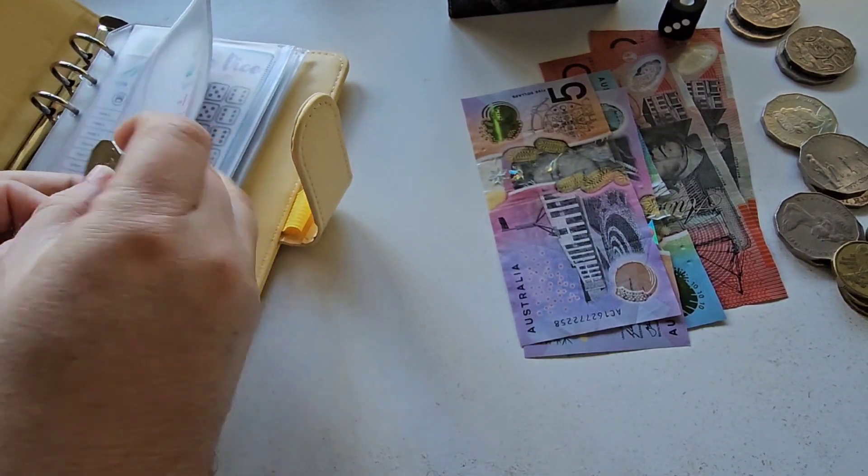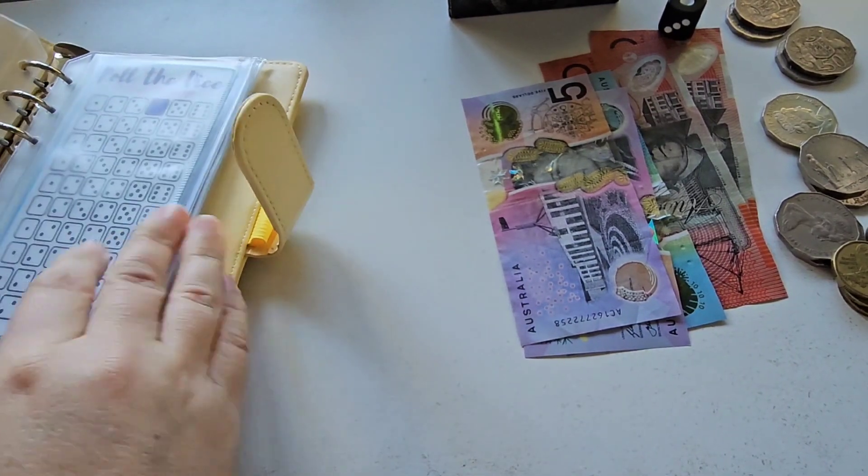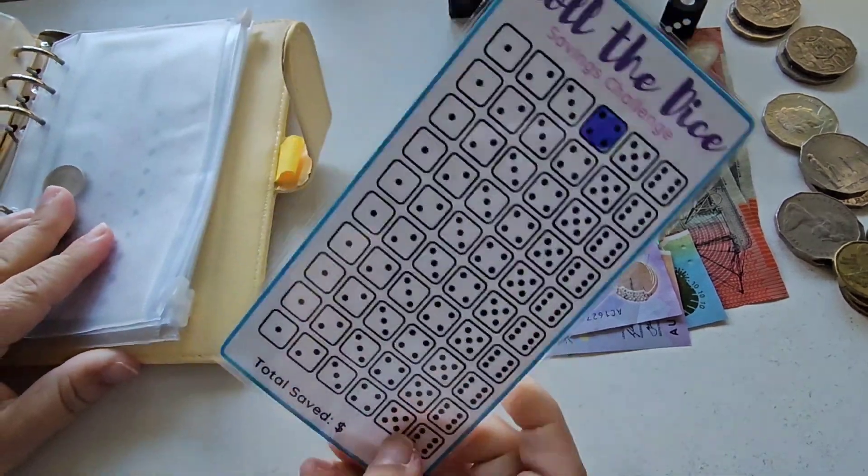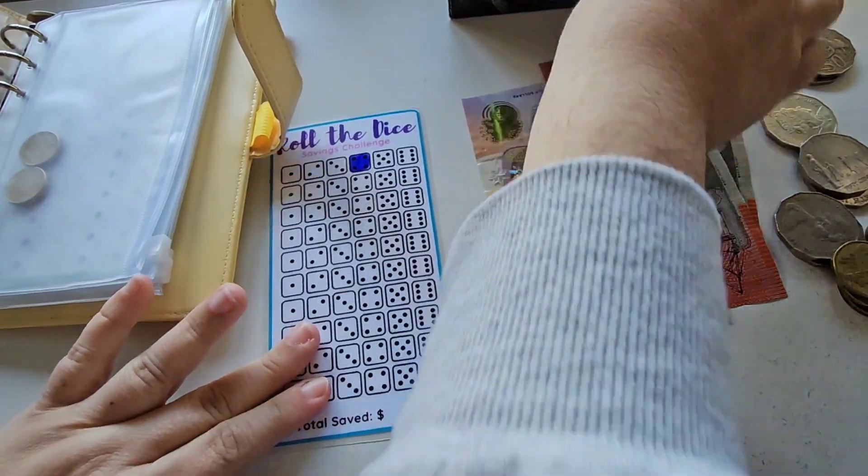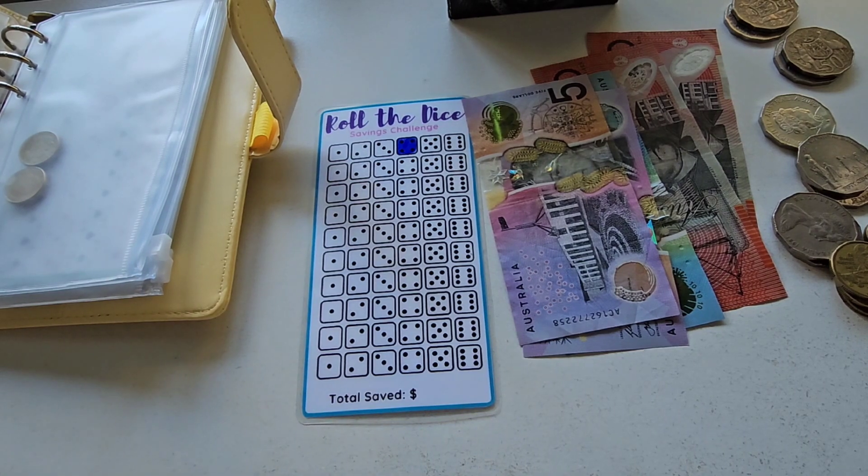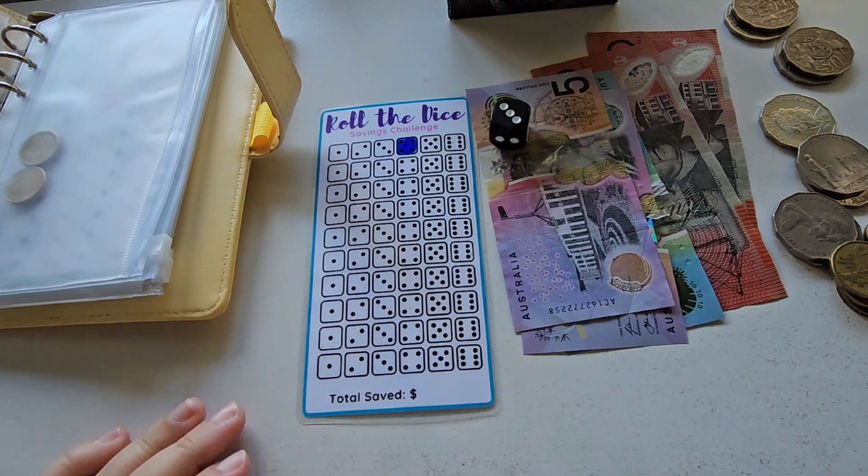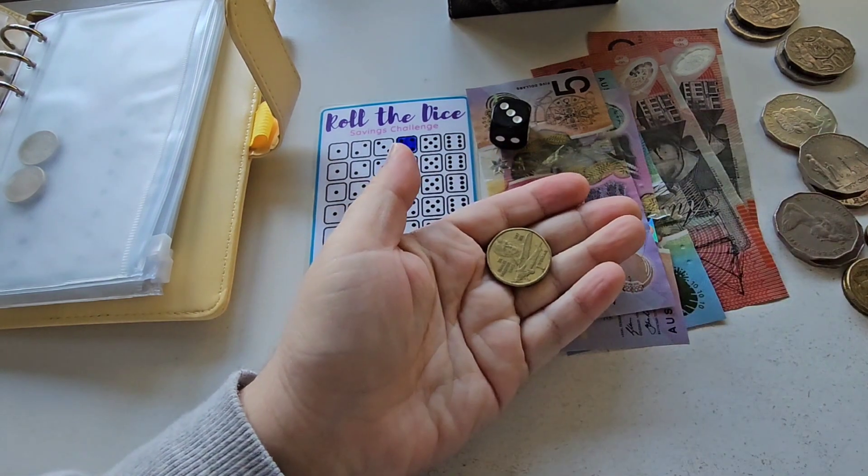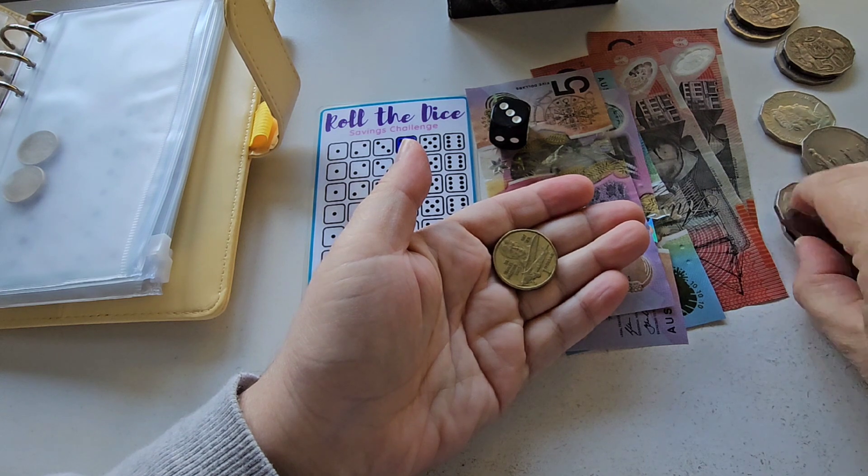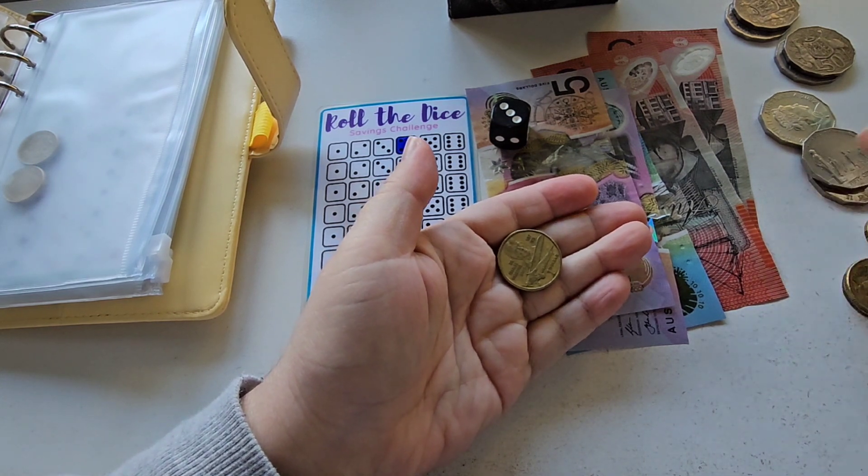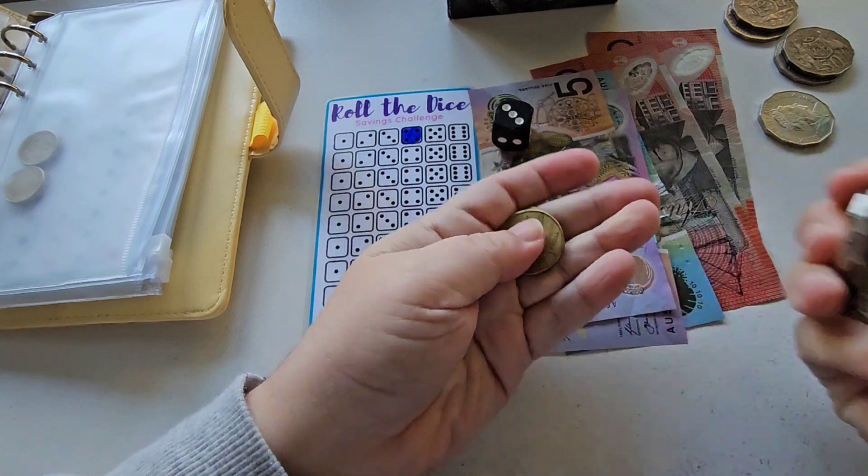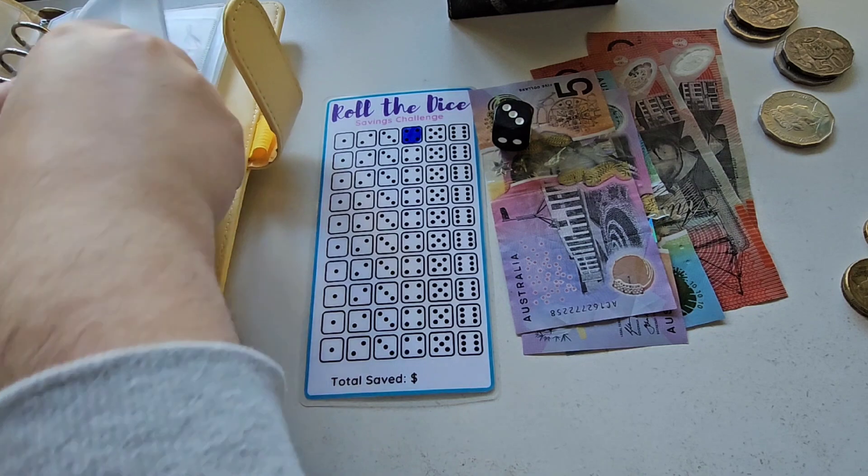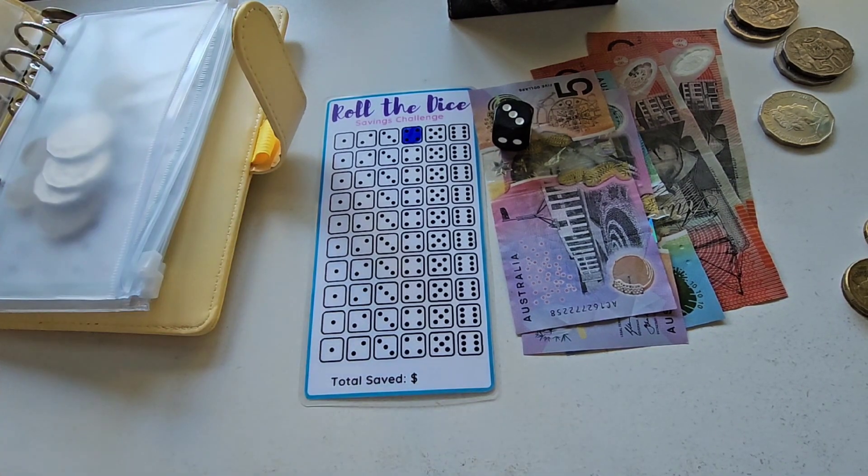So we're going to put the 50 cents into there for that and then we're going to do roll the dice and we're going to get a three. So I'm just doing it as like one dollar, two dollars, three dollars, four dollars, five dollars, six dollars for it. So I've just got three dollars there to pop in and then I'll just mark it off.